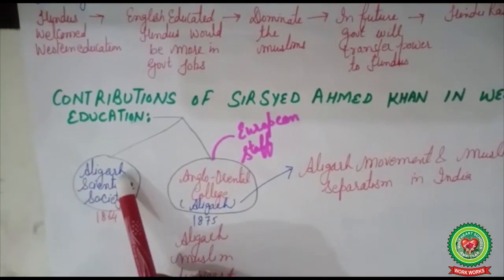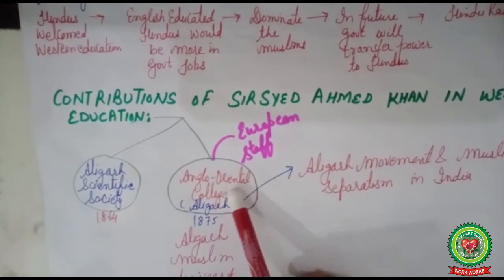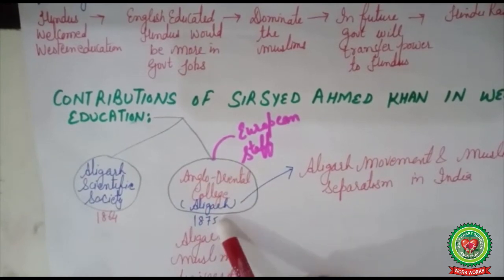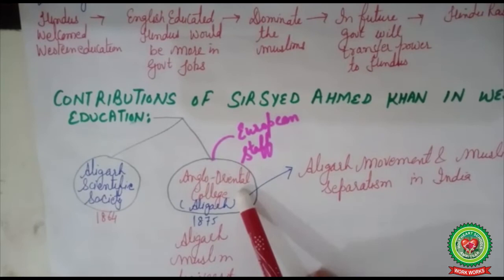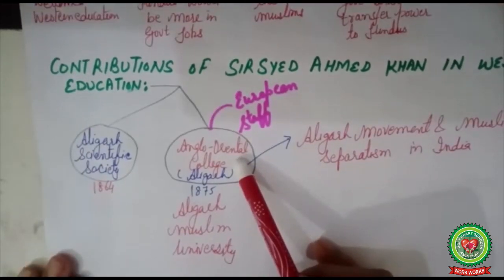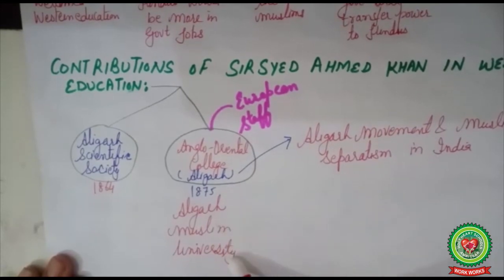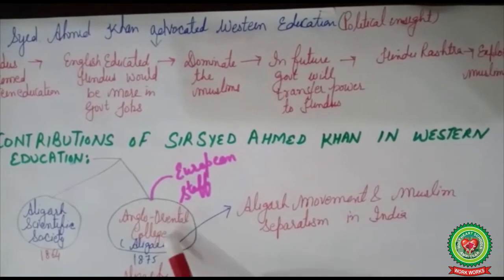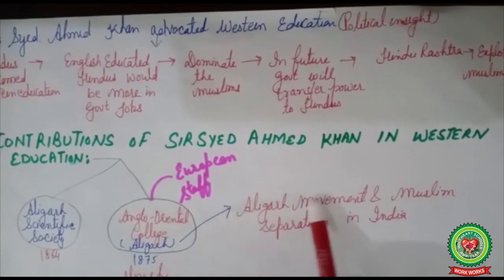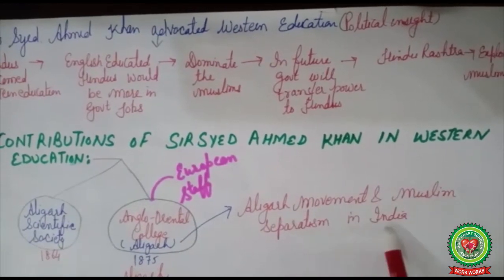To promote Western education among Muslims, Sir Syed Ahmed Khan set up the Aligarh Scientific Society in 1864. He then set up the Anglo-Oriental College at Aligarh in 1875, where most of the staff was European. At present, this college has developed into a leading university — Aligarh Muslim University. Slowly the campus of the Anglo-Oriental College developed into a political arena, and the Aligarh Movement and Muslim separatism in India developed here.